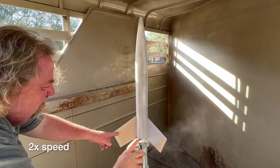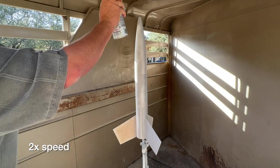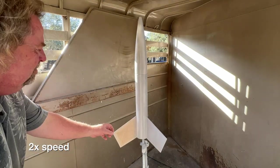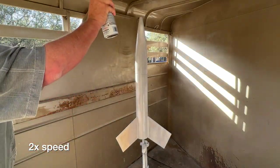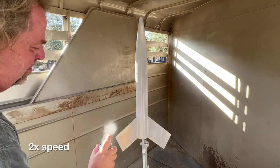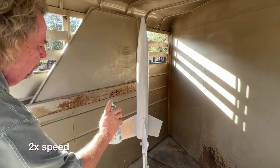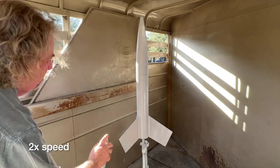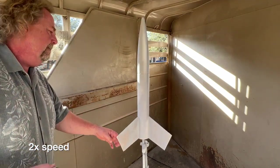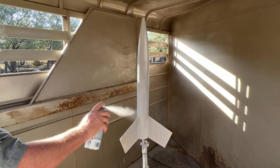I like to use a microphone stand as a holder for larger models. You can pick one up new for about 30 bucks, or much less if you scrounge a used one somewhere. The primer is applied in long strokes. The important thing is to start off the model and finish off the model. Maintain a constant distance from the surface of the model.